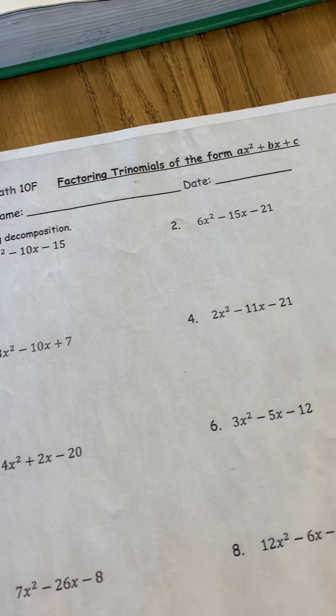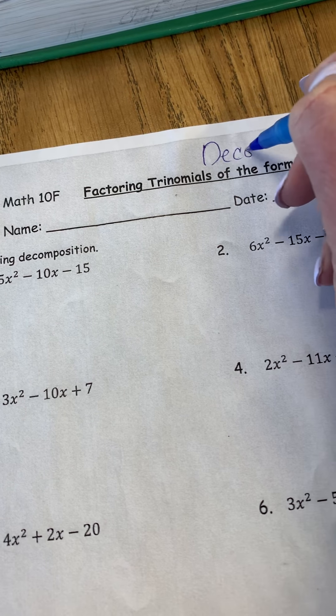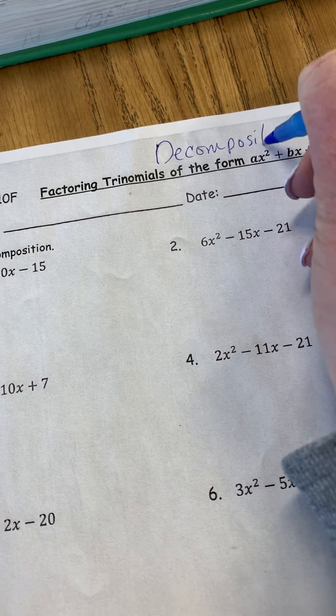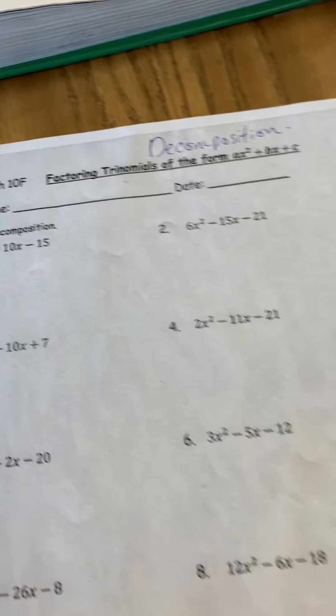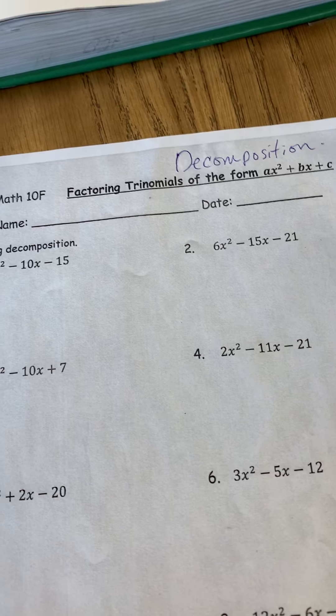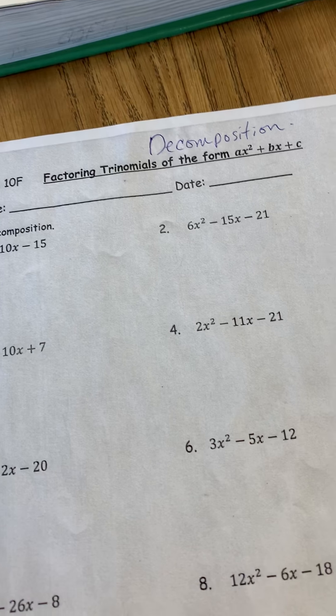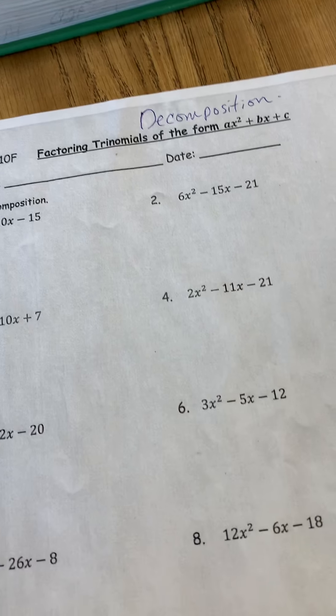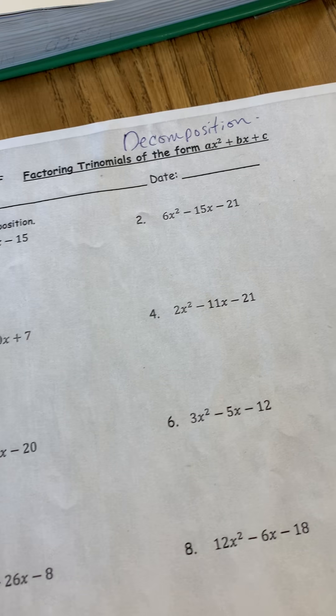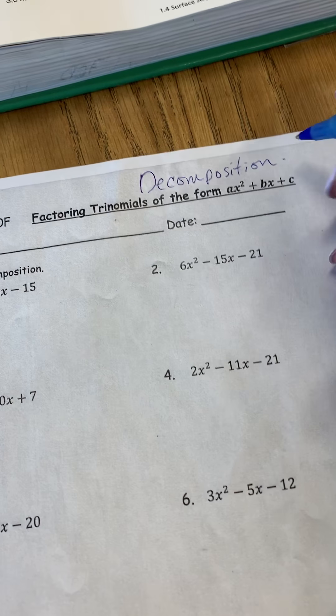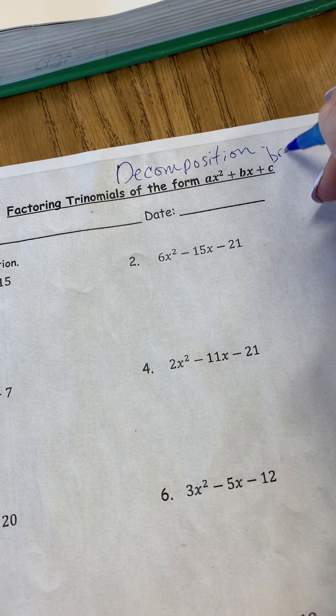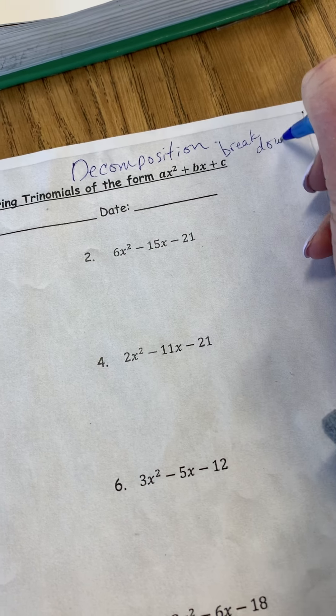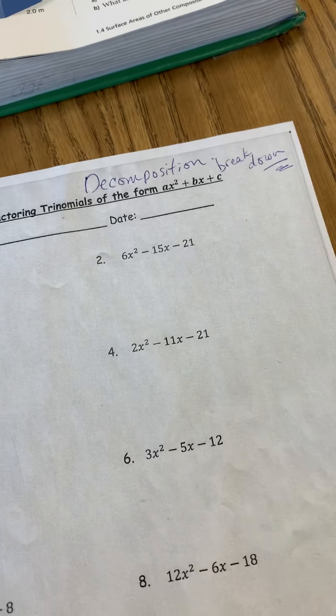And it's called factoring trinomials in the form ax squared plus bx plus c. It's what I call, and we would have written this down, I call it decomposition. So the first thing I just said to you, what does the word decompose mean to you? We would have had some conversation and maybe a few laughs. But really what I want you to know is it means that something's going to break down. And hopefully it's not me.